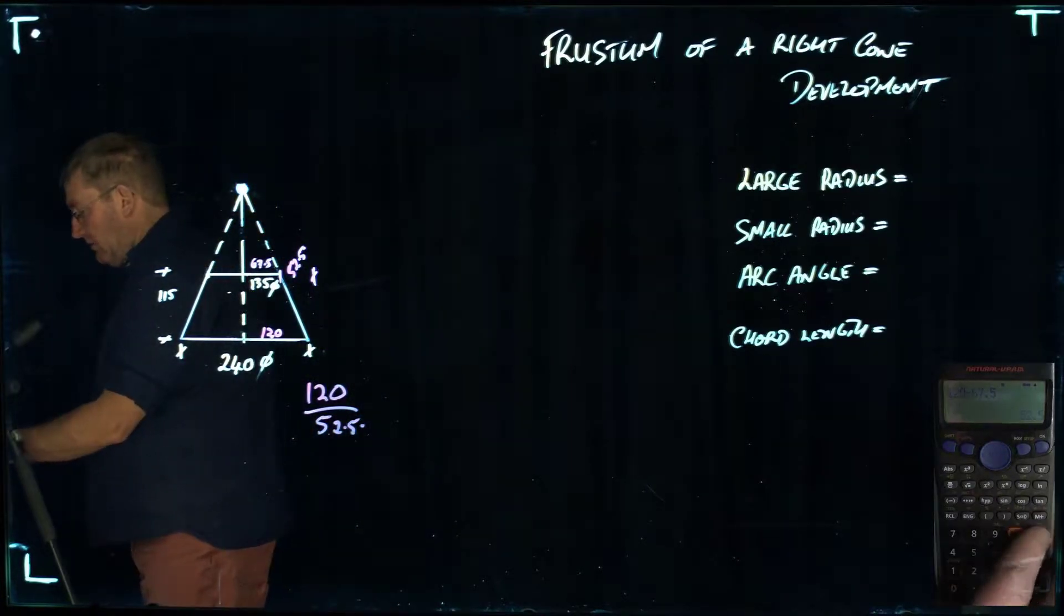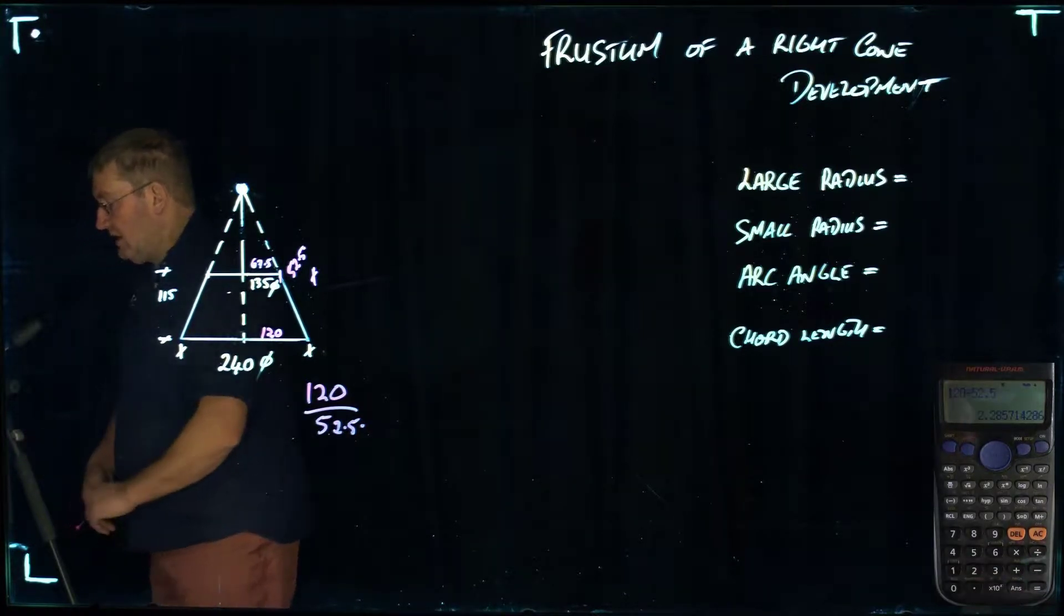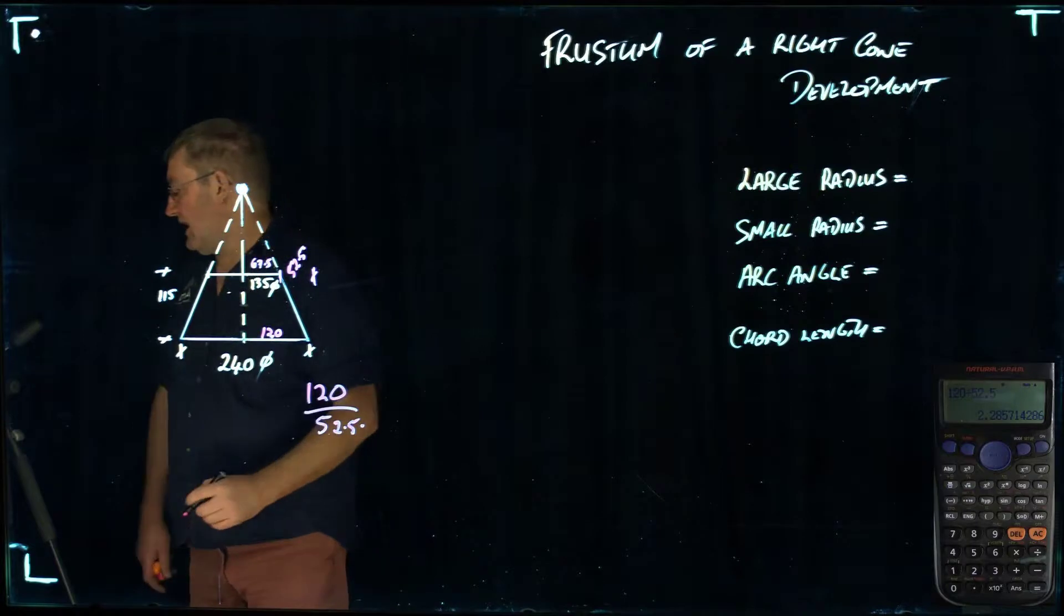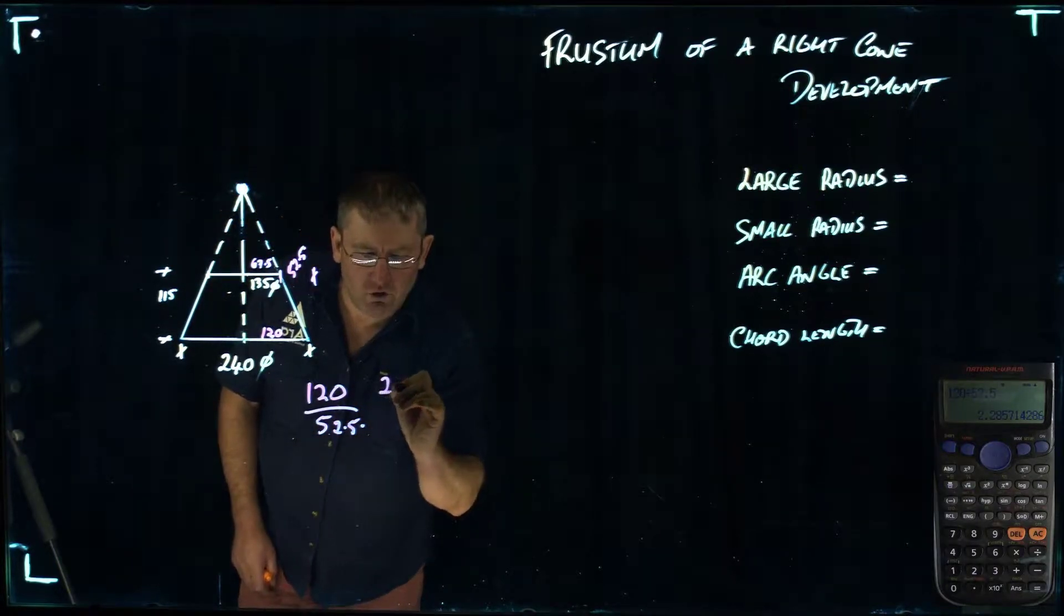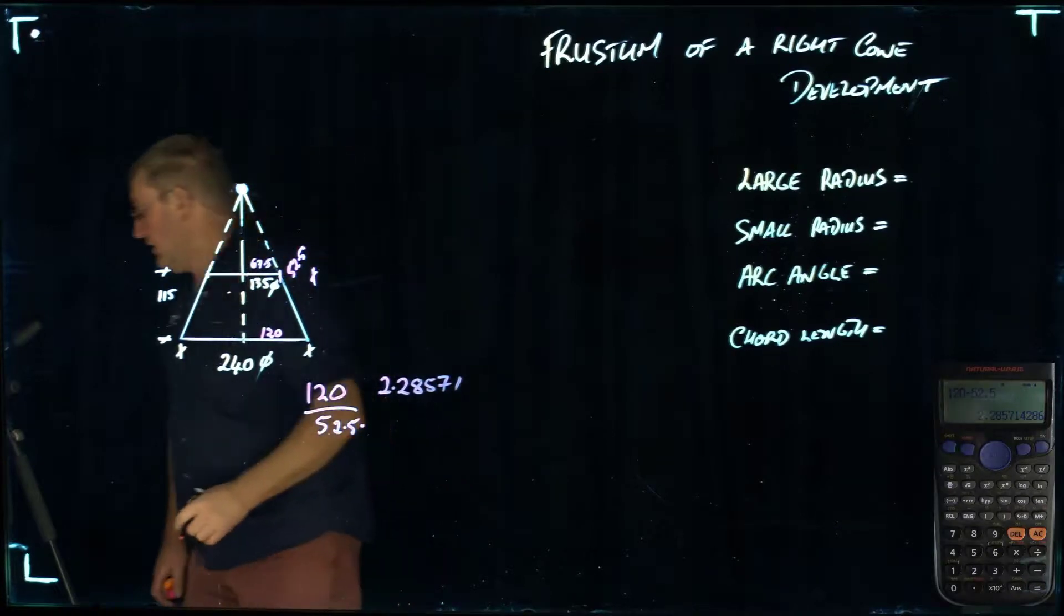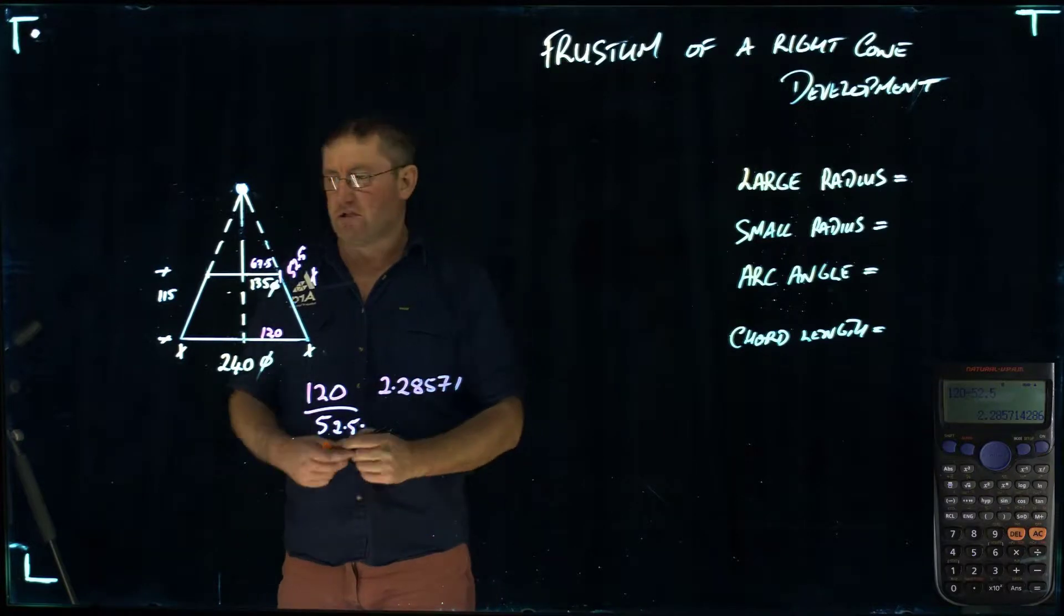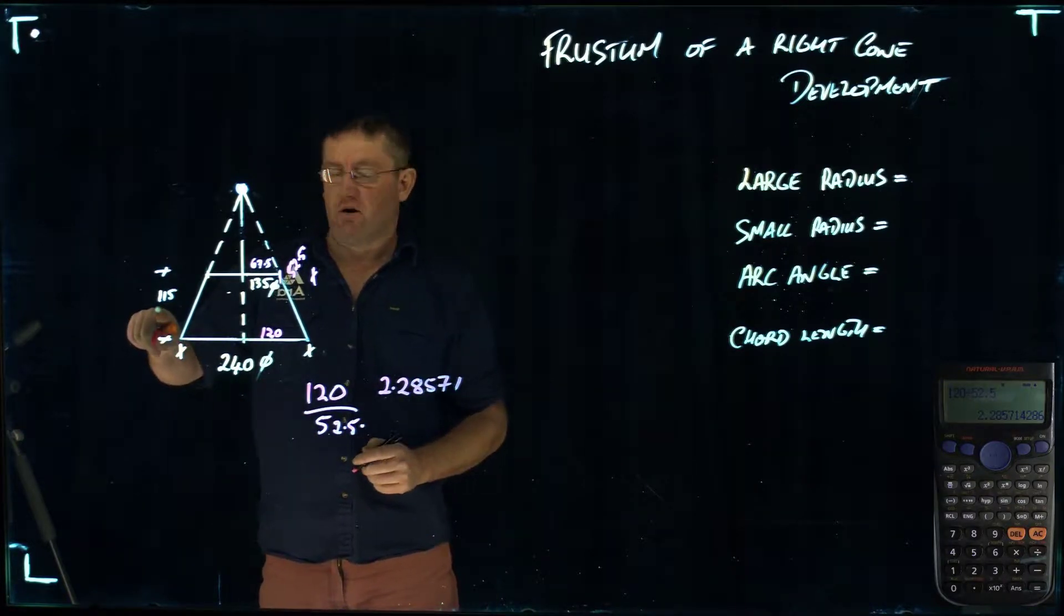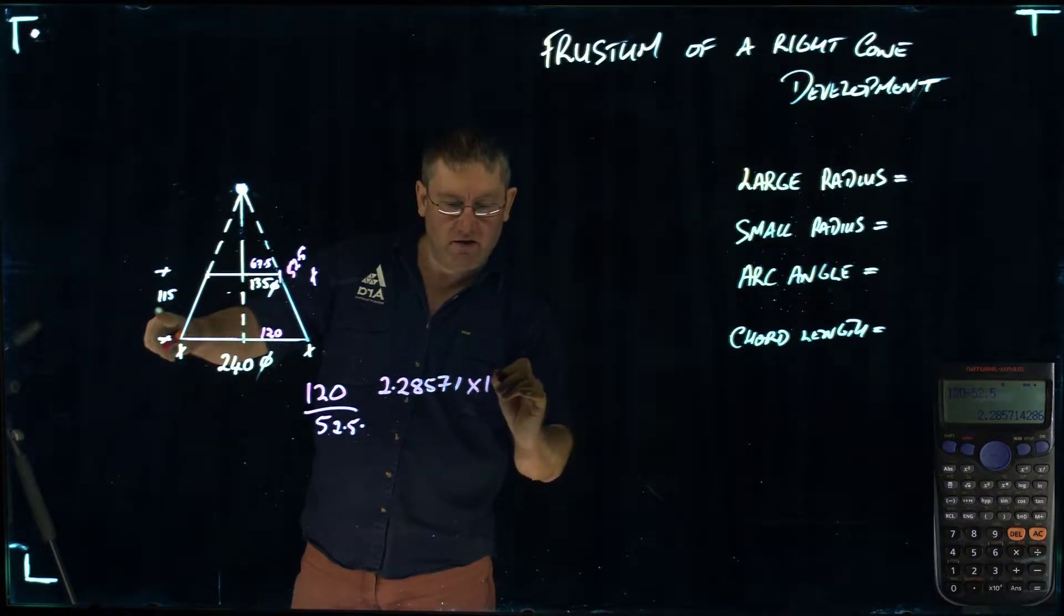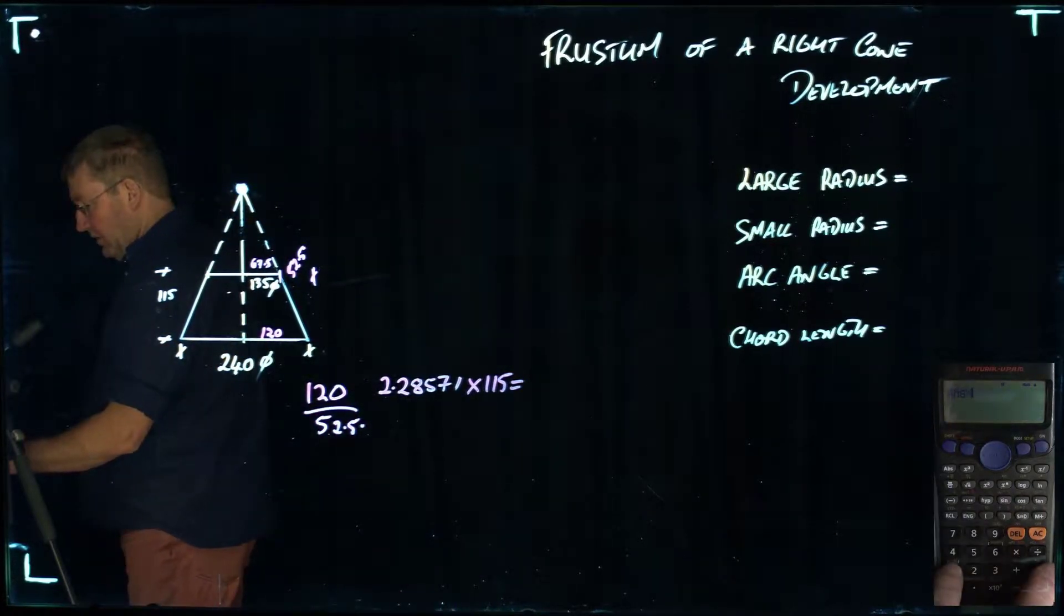On the calculator, I'll do that. 120 divided by 52.5 equals, and I'm getting a figure there of 2.28571. I'm going to go to that many decimal places. What I then do is times it by my height here of 115. I'm going to times that by 115.